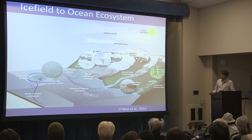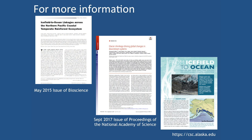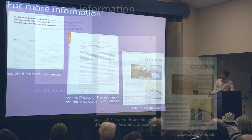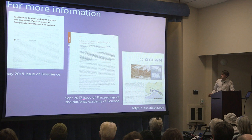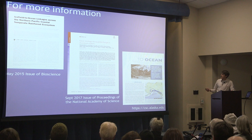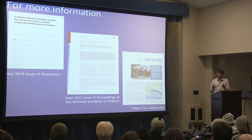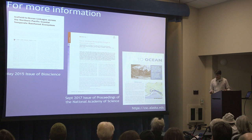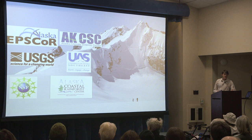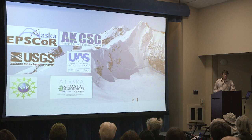For those interested, I'll point out a couple of resources. Two are review articles accessible to anyone with a general background: one in the May 2015 issue of Bioscience, and a more recent one about glacier impacts on downstream ecosystems in the September 27, 2017 issue of Proceedings of the National Academy of Sciences. The Alaska Climate Science Center also has a fact sheet on their website on the ice field to ocean project. I'd also like to acknowledge funding, particularly from Alaska EPSCoR and the Alaska Climate Science Center, which have been very supportive of the interdisciplinary efforts required for this work. I'd be happy to take any questions.